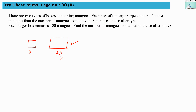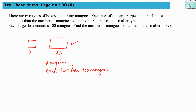They have given us mixed information for both boxes. Each larger box contains 100 mangoes. So we know that each larger box has 100 mangoes. Within these 100 mangoes, four mangoes are more compared to the smaller boxes. There are eight smaller boxes. This is all the information that has been given to us.